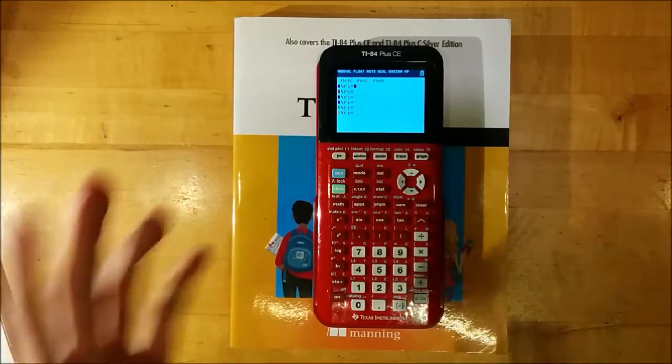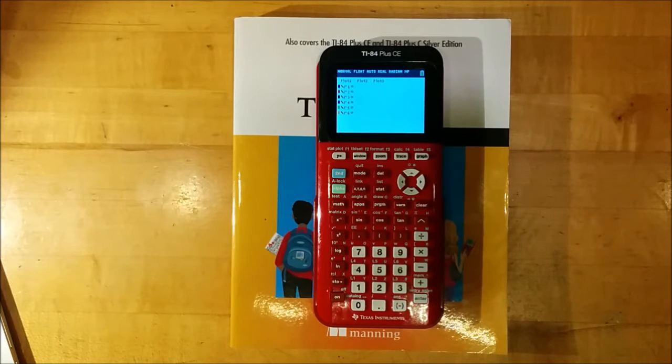Press Y equals, and the Y equals menu has changed once again. Now we have R1 equals, R2 equals, R3 equals. These are functions for the radius R in terms of some angle theta. And this time, when we press the X, T, theta, N key, we get a theta instead of either X or T.